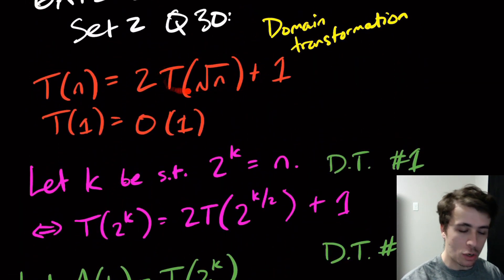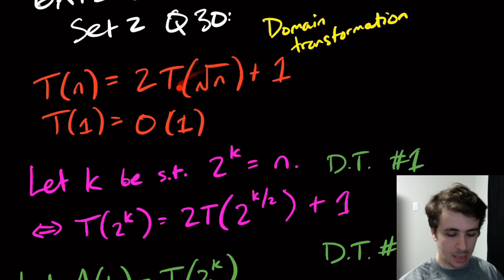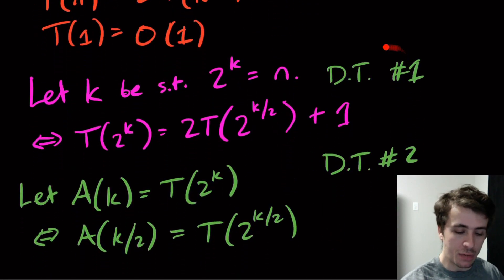This funky recursive recurrence relation that didn't fit into the master theorem, we could mold it into being something we could put in the master theorem by use of these things called domain transformations, which is pretty cool.